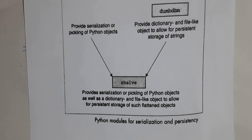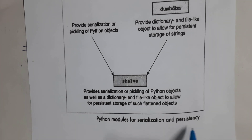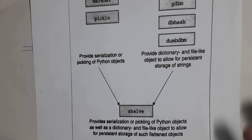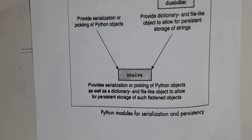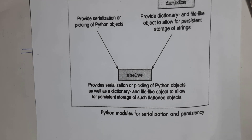In an exam you may get a question like 'explain Python modules for serialization and persistency.' When this question comes, write a diagram and explain pickle module, marshal module, shelve module and dbm package. Serialization is the process of converting Python objects like list, set, tuple, dictionaries into binary format — in the form of zeros and ones. Persistence means permanent storage — by using files and databases we can store data permanently.